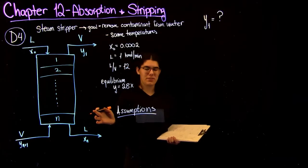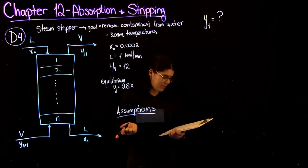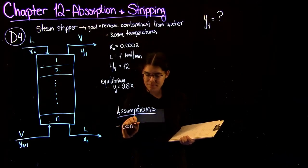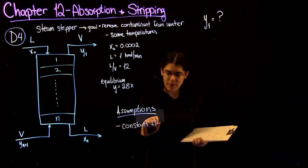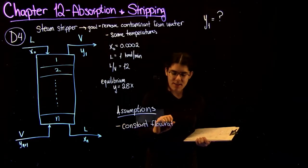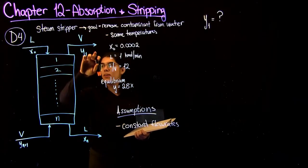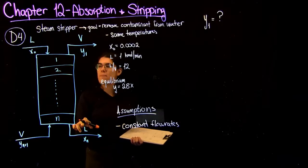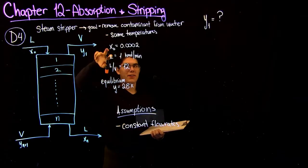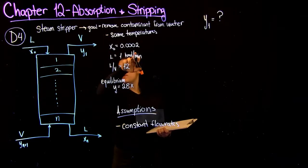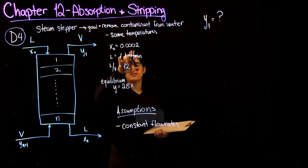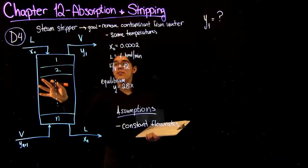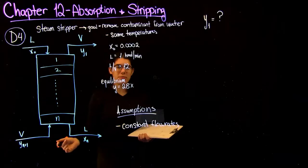I'm going to make two assumptions in order to be able to solve this problem. So the first assumption we're going to make is that we're going to assume constant flow rates. So what this means is that the V here and the V here are going to be equal, and the L here and the L here are going to be equal. And we can actually make this assumption because, as you can see, it's a very, very dilute system with small compositions. So that means that this component moving from the liquid to the vapor or the other way around isn't really going to change the overall flow rate.